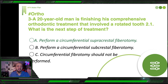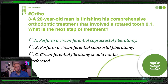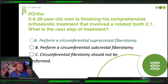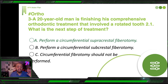So the answer is: perform a circumferential supracrestal fibrotomy — not subcrestal. That completes the three ortho questions. Ortho can be intimidating because of the many unfamiliar terms, but when you understand the meaning of the angles, overjet, overbite, and the surgery, everything becomes easier. Don't try to memorize ortho — understand it. Understanding takes a bit more time, but the knowledge becomes solid and you can answer questions easily.